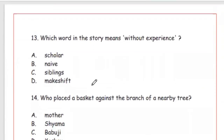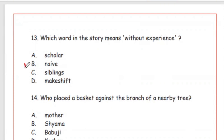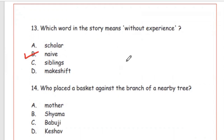Question 13: Which word in the story means 'without experience' — what we call naadhan? Options: scholar, naive, siblings, makeshift. The right answer is naive (Option B), because 'Naive Friends' means naadhan dost.